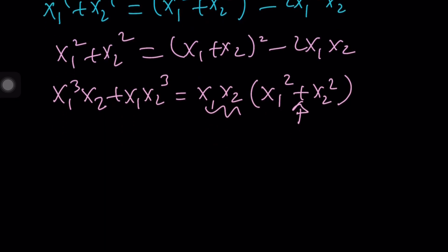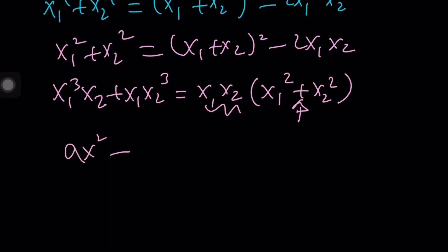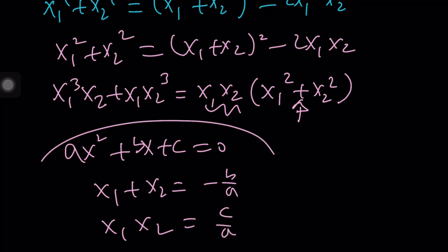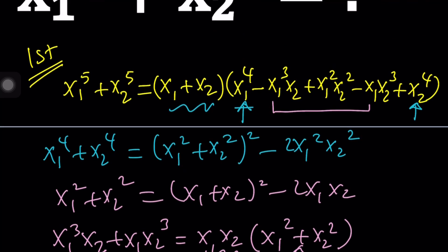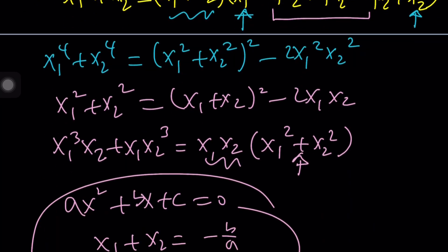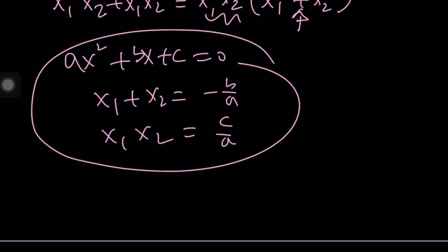Now, Vieta's formulas give us two things. If we have ax squared plus bx plus c equals zero, then x1 plus x2 is negative b over a. And the product is c over a. So by using these two formulas, in this case a is equal to one of course, you can evaluate all these things and plug them in.